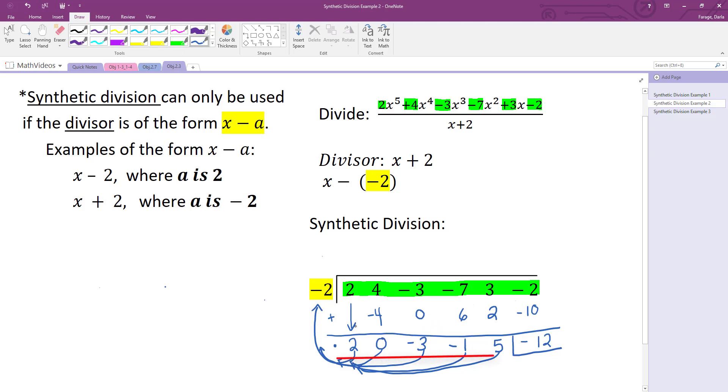What you actually did is you performed division, even though you may not quite know that yet. This first piece here is your quotient, and this second piece here is your remainder. And so what happens is you did take your divisor, x plus 2, so we'll write it in the form x minus a negative 2, and you divided that into 2x to the 5th plus 4x to the 4th minus 3x cubed minus 7x squared plus 3x minus 2.